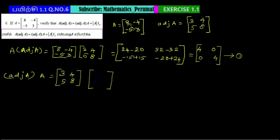Now computing adjoint of A times A. Matrix [3, 4; 5, 8] times [8, -4; -5, 3]. First row, first column: 3 times 8 equals 24, 4 times -5 equals -20. First row, second column: 3 times -4 equals -12 plus 12. Second row, first column: 5 times -5 equals -25 plus -40. Second row, second column: 5 times -4 equals -20, 8 times 3 equals 24.